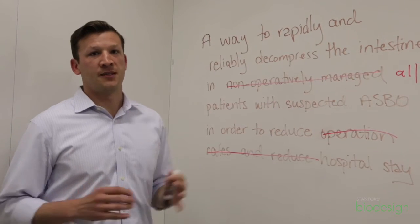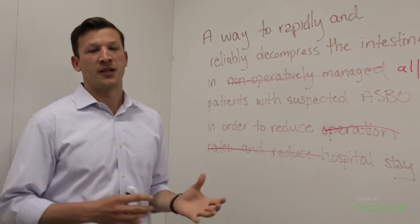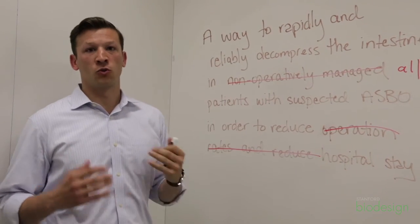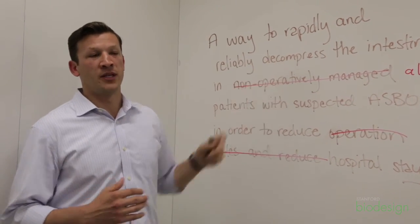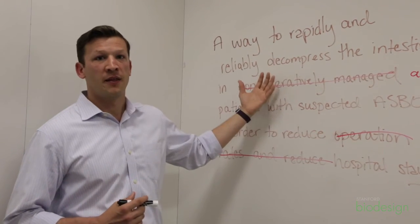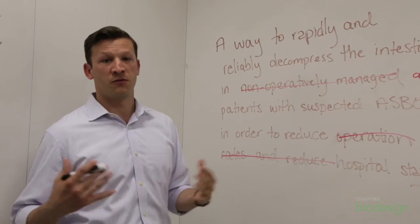As we scope our needs up and down in the population and the outcome, whenever we would alter one element of the need statement, we would need to go back and look at the whole need statement, because if you alter your population, that may actually change what outcome you need to focus on.